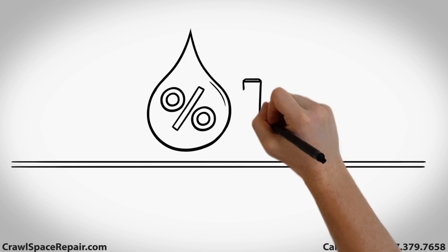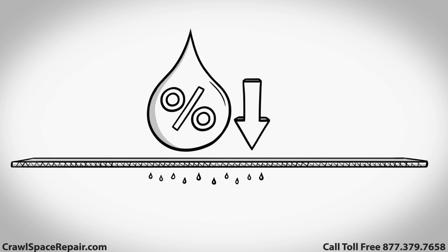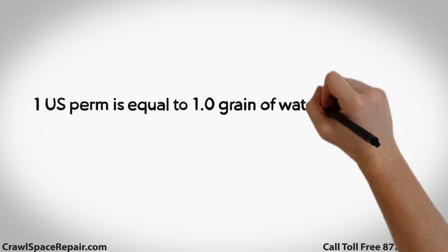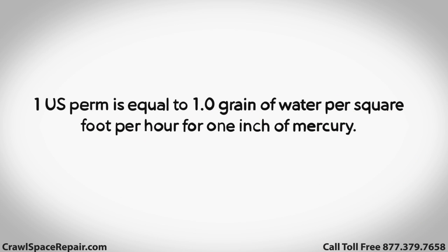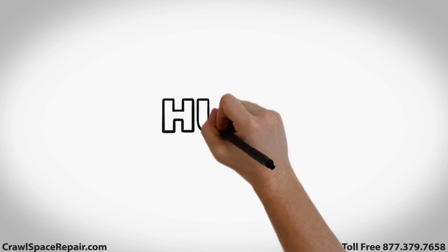Perm is a measure of the rate of transfer of water vapor through a material. More specifically, 1 US perm is equal to 1.0 grain of water per square foot per hour for 1 inch of mercury. Huh?